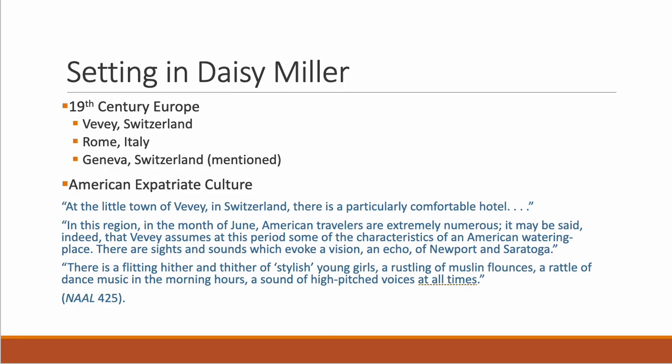There are basically three main settings in Daisy Miller. Vevey, Switzerland, where the story opens, is a kind of hybrid location where Americans have overrun a Swiss town. Rome, Italy is a more foreign and different location. And then Geneva — we never actually go to Geneva, but the specter of Geneva haunts the entire story. It's where Winterborn is from, and it is seen as quintessentially European, where the rules are different.